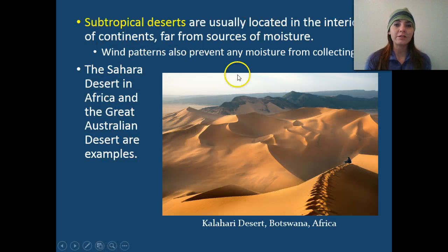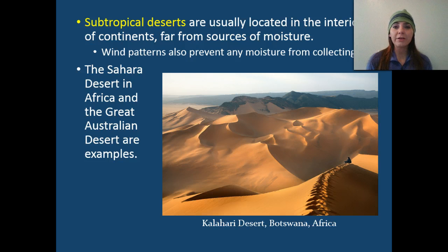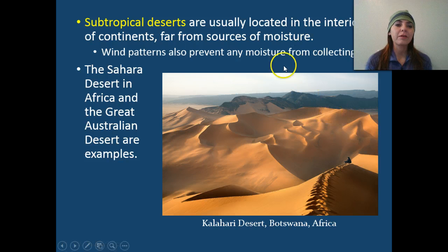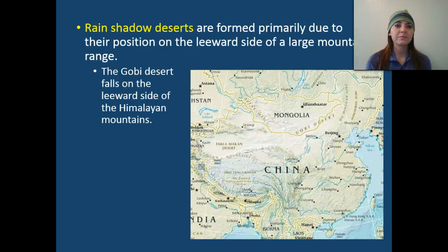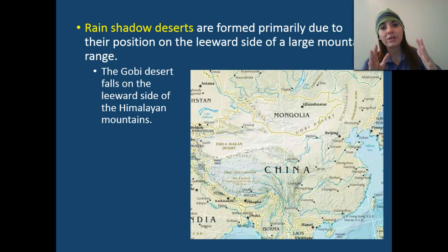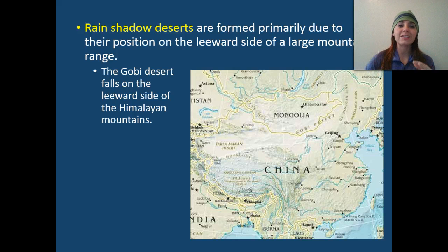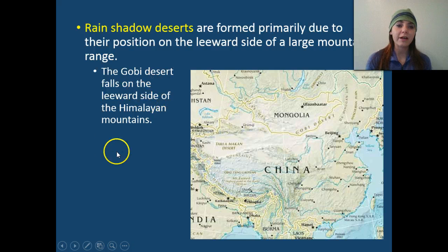We have our subtropical deserts, usually located in the interior of continents, far from any source of moisture. Wind patterns also prevent moisture from collecting — think about those winds hitting the windward side of a mountain and not the leeward side. The Sahara Desert in Africa and the Great Australian Desert are examples of subtropical deserts. Rain shadow effect deserts are formed primarily due to their position on the leeward side of a large mountain — the windward side gets all the rain, but the leeward side gets nothing. A big example is the Gobi Desert, which falls on the leeward side of the Himalayan mountains.